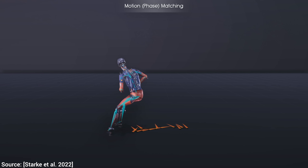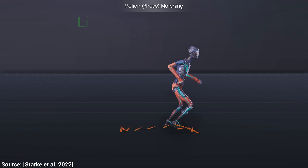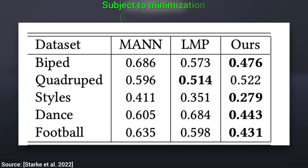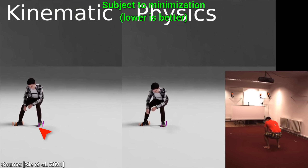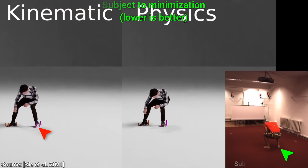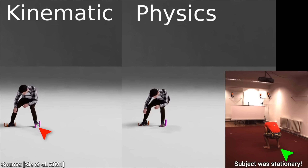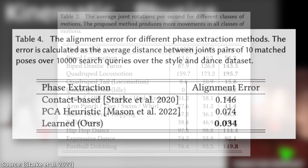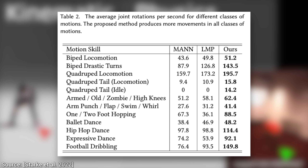And the second insight is about foot sliding. This new technique shows less foot sliding in most cases than previous methods, and even in the worst case, it is comparable. Look, this was a huge problem for previous techniques. But really, whatever metric we use to measure the new one against previous techniques, it performs better in pretty much all of them. Incredible!